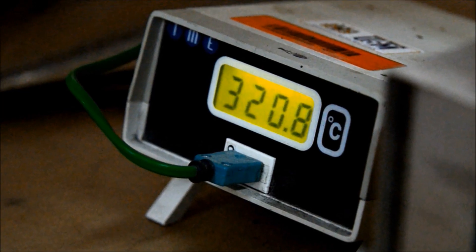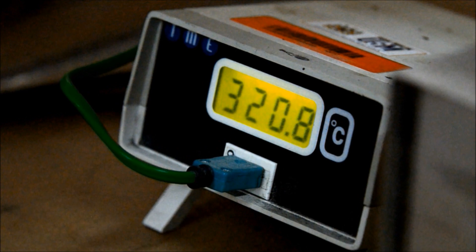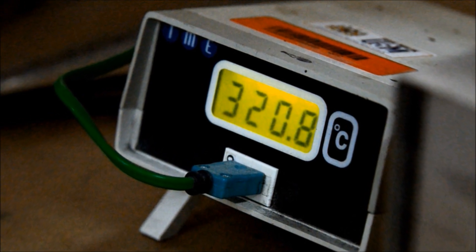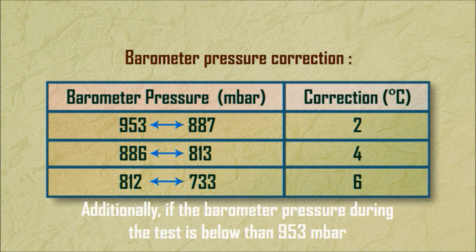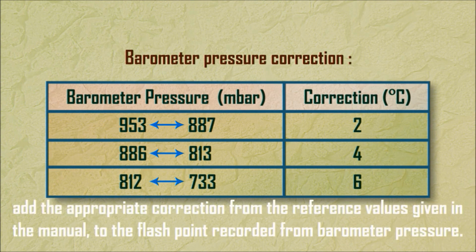Adjust the temperature of the specimen as needed. Additionally, if the barometric pressure during the test is below 953 mbar, add the appropriate correction from the reference values given in the manual to the flashpoint recorded from barometric pressure.